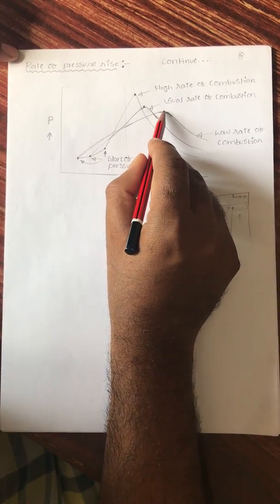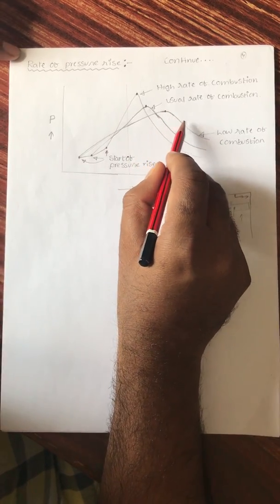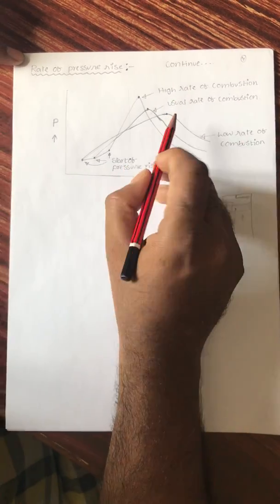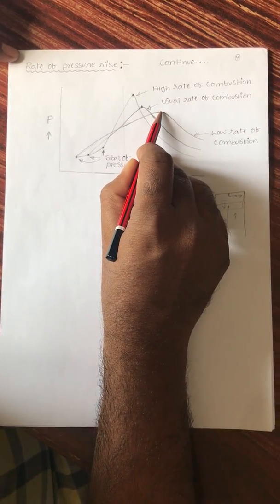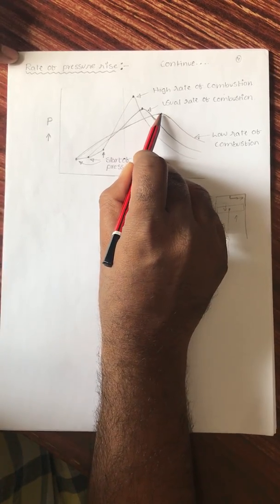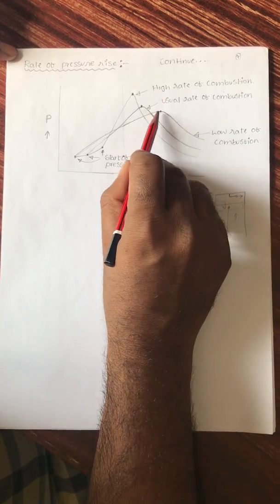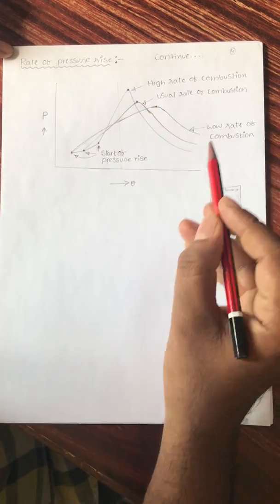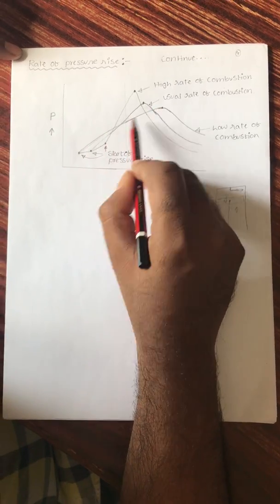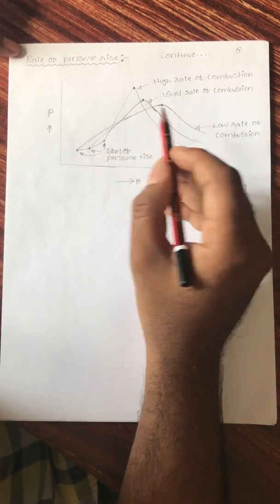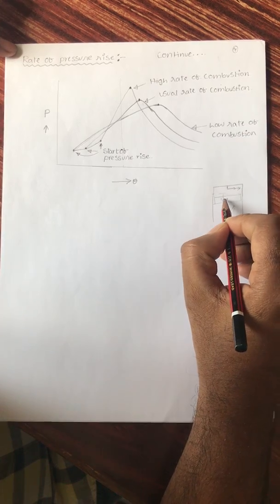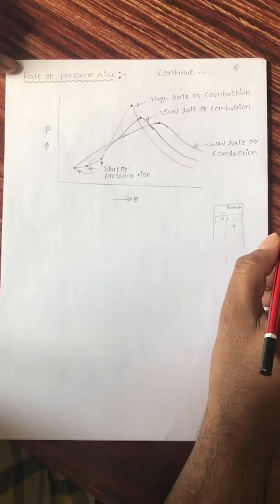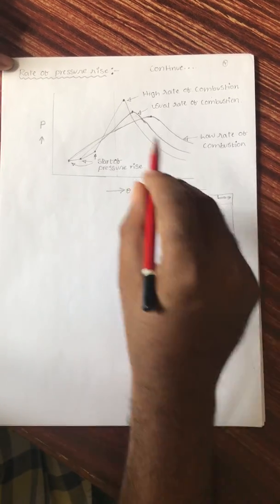This point does not represent complete combustion — after this, there is also some after-burning due to chemical re-association. After the flame reaches the end portion and maximum pressure is reached, some burning still takes place. In low rate of combustion, the process is so slow that even after the piston starts moving down from TDC, the flame is still reaching the end portion.